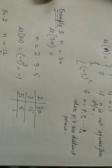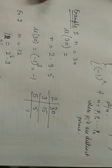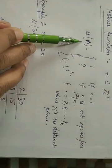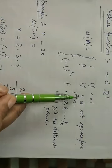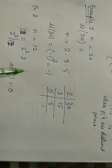Now take the next example: n = 12. We can write 12 = 2² × 3, because 12 = 4 × 3 and 4 = 2². Since 2² divides 12, there exists a prime (which is 2) whose square divides 12. Therefore μ(12) = 0.